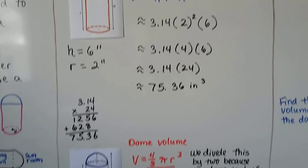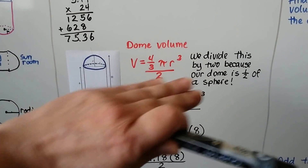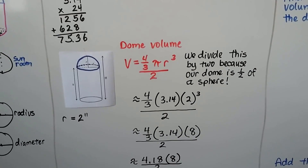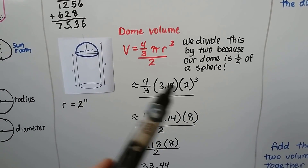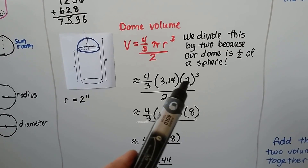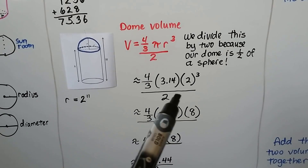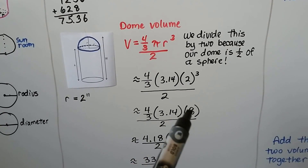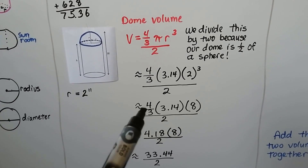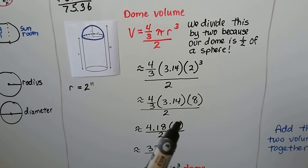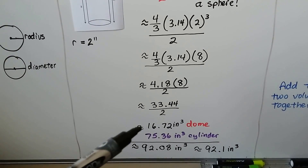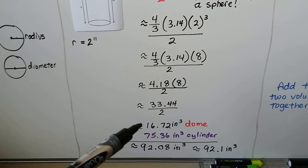We set this amount aside and now we find the volume of the dome. Here is the volume of a sphere formula. We divide it by 2 because our dome is only half of a sphere — it's a hemisphere. It doesn't matter what order we multiply them in. We put in our radius of 2, and it's cubed for the volume, so we do 2 times 2 is 4 times 2 is 8. We multiply 4 thirds times the 3.14 — do the numerator first — and we get 4.18, and that's multiplied by 8. We divide it by 2 and get 33.44 divided by 2, which is approximately 16.72 inches cubed.